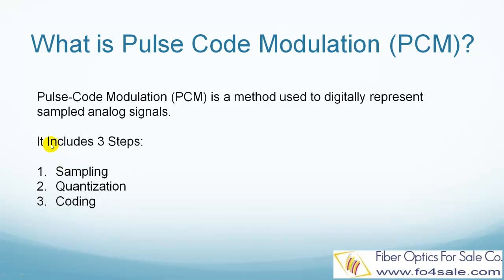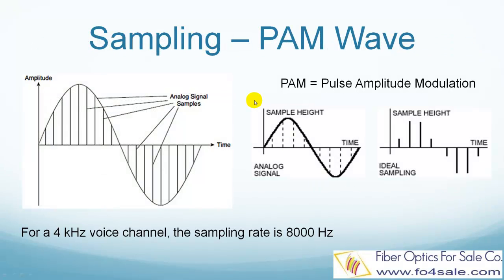The PCM process includes three steps: sampling, quantization, and coding. In the sampling process, the magnitude of the analog signal is sampled regularly at uniform intervals. The obtained values are called samples. For our 4 kHz voice channel, the sampling rate is 8000 Hz, which means the signal is sampled 8000 times per second. The samples will then be converted to digital numbers, as we will see in the quantization process.